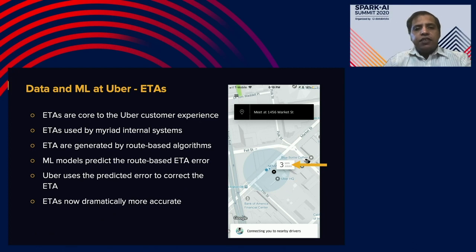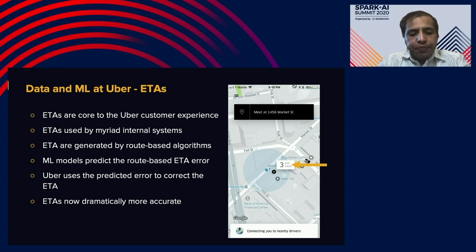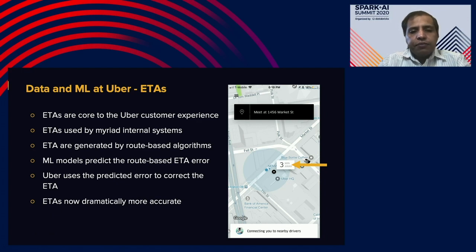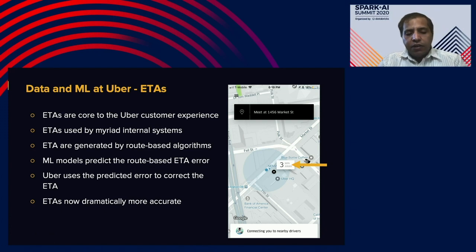ETA is a very important use case for Uber. When you open the app, you see cars are three minutes away. When you click on ride, it gives you a route and estimated time. ETAs are generated by route-based algorithms — many ML models which crunch lots of data and produce these ETAs. Any errors in the ETAs are taken as feedback and processed with the next rides. This is a very important use case powered by ML and data platforms.